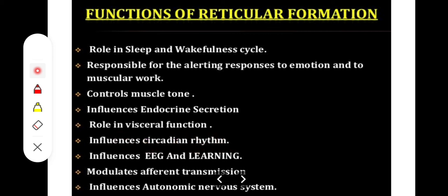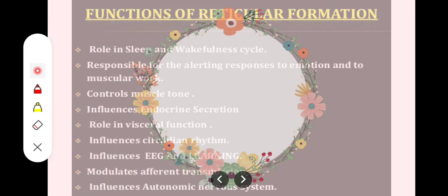The reticular formation also has an important role in the day and night cycle, or circadian rhythm, due to its connection with the hypothalamus. It modulates efferent transmission by receiving signals from visceral and somatic regions of the body. Additionally, it helps control facial expression of muscles. It plays a role in the autonomic nervous system through the lateral gray column nuclei and craniosacral parasympathetic nuclei, with fibers helping to alter and control autonomic activity.